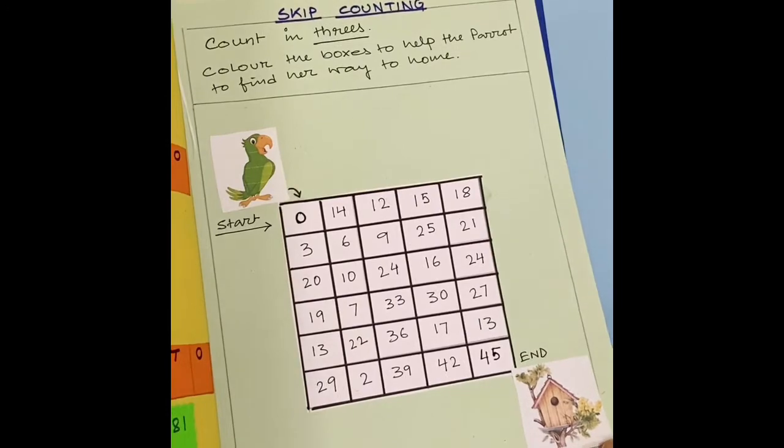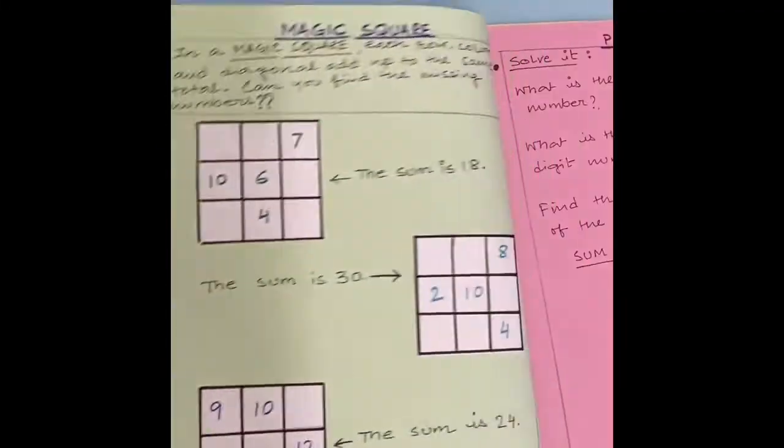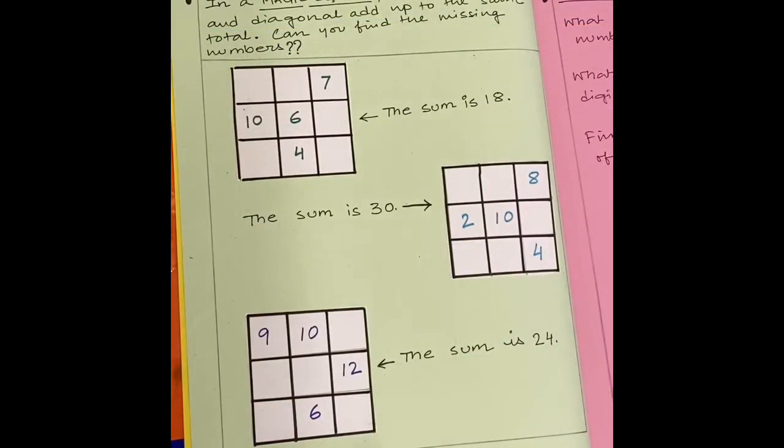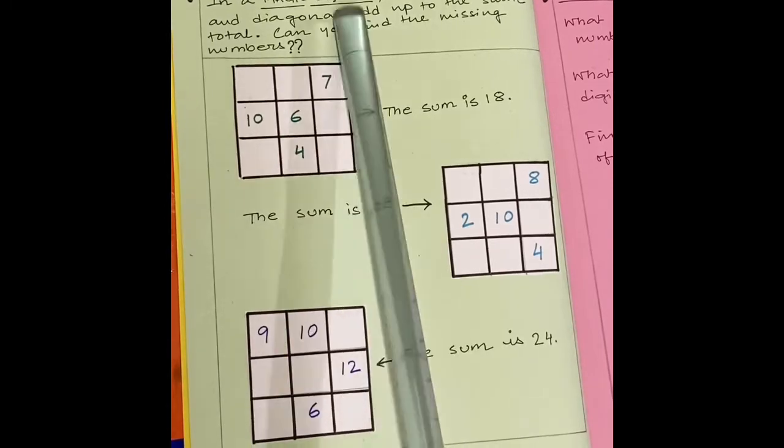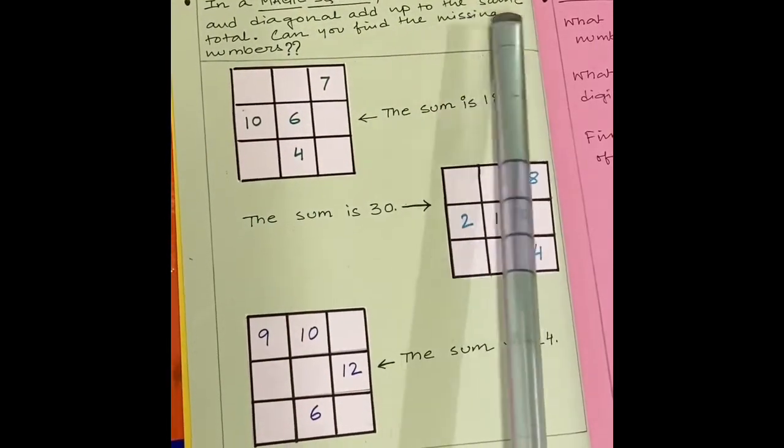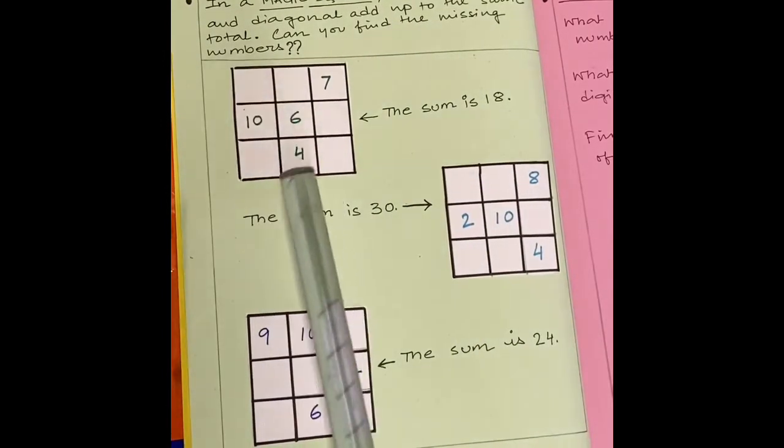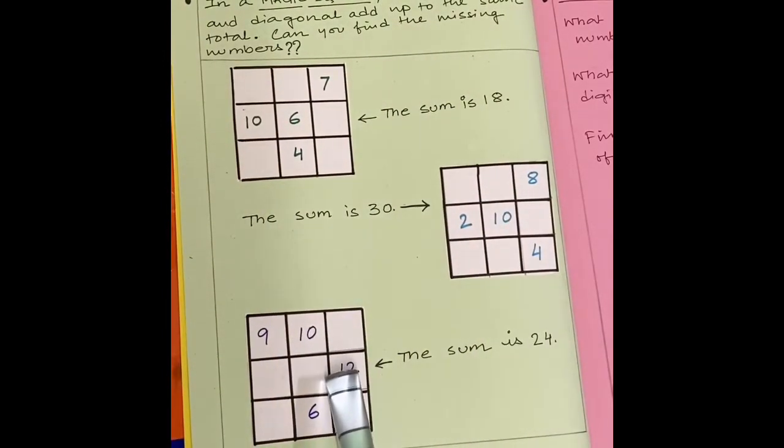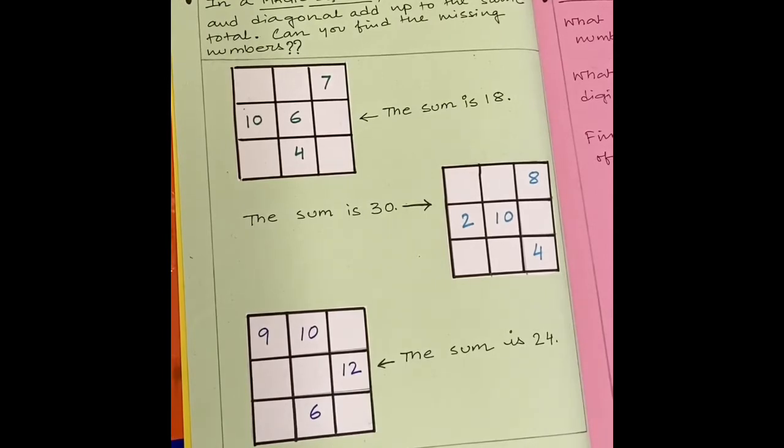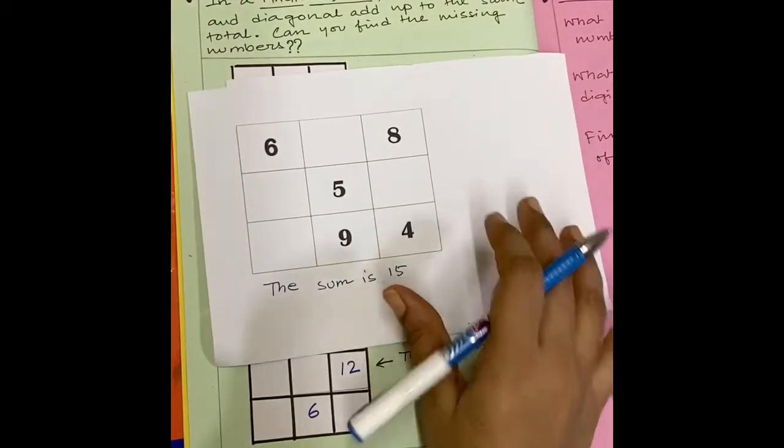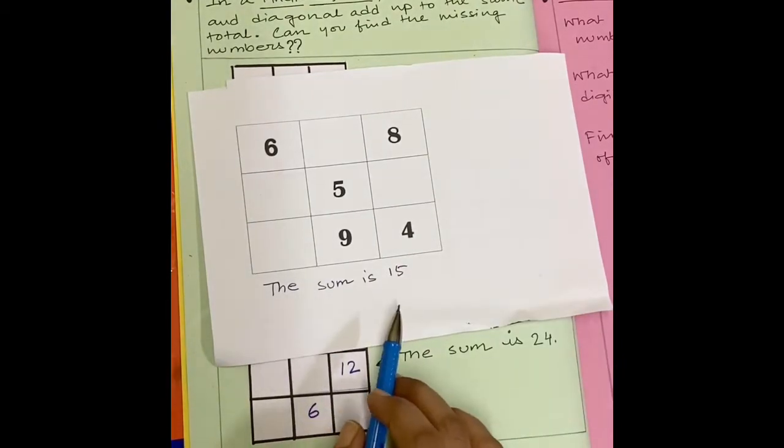Now come to the next page. That is page number 3. Magic square. In a magic square, each row, column and diagonal add up to the same total. Now here are some squares. I am giving you an example so that you can understand. See, this is also a magic square. And the sum is 15.